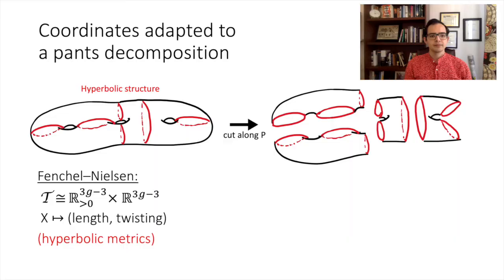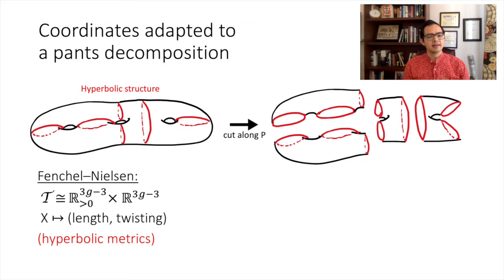Before we get into the full conjugacy, I want to start off with an example from first principles. Fix a pants decomposition of your surface. As we recalled in part one, the Teichmüller space of all hyperbolic structures on the surface can be coordinatized by length parameters and twist parameters after choosing base points on each pants curve. So we can identify Teichmüller space as the product of an orthant, which parameterizes the lengths of the pants' cuffs, and a vector space which parameterizes the twists. These are the classical Fenchel-Nielsen coordinates for hyperbolic structures.